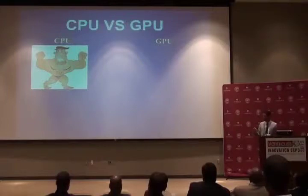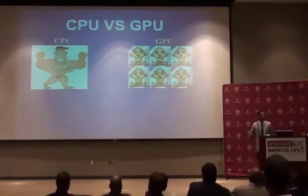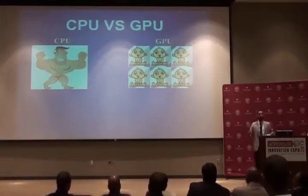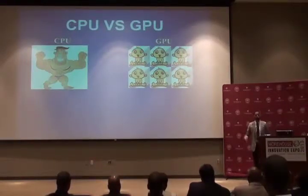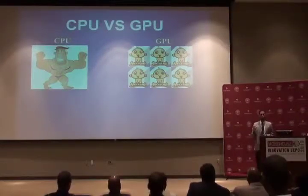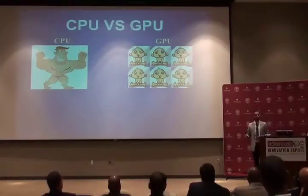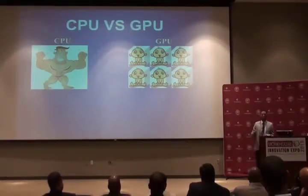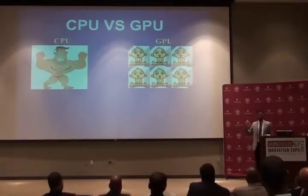The GPU, on the other hand, is not a bodybuilder — it's more like a gang of diligent babies. These diligent babies don't have as much intellectual aptitude as the bodybuilder, but they have strength in numbers. They can only do simple tasks, but they can do them concurrently, which is perfectly representative of science problems: a lot of calculations done on a large scale — perfectly fit for the GPU.